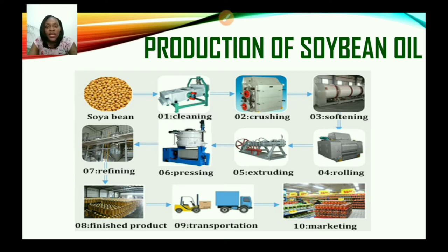Now let us zoom in on the production of soybean oil. The first step is soybeans — then they are cleaned. After cleaning they are crushed. They are also softened, refined, pressed, extruded, and rolled to produce the finished product, which is the oil.